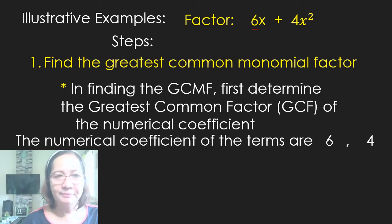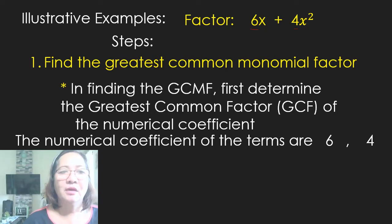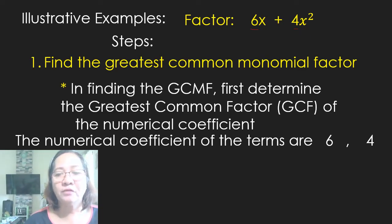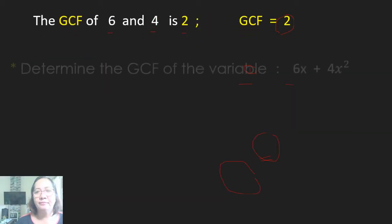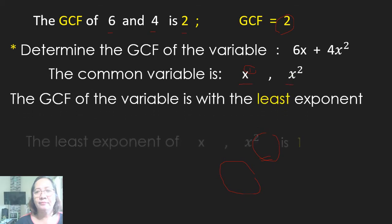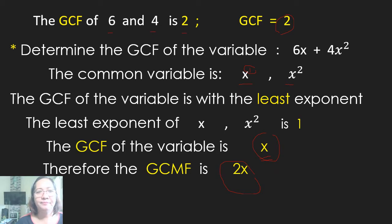Let's take an example. Factor the polynomial 6x plus 4x². Step 1: Find the Greatest Common Monomial Factor. In finding the GCMF, first determine the Greatest Common Factor of the numerical coefficients. The numerical coefficients of the terms are 6 and 4. The greatest common factor of 6 and 4 is 2.